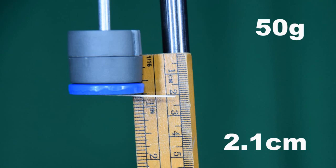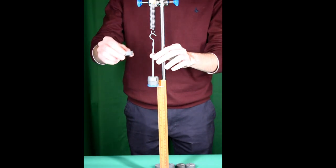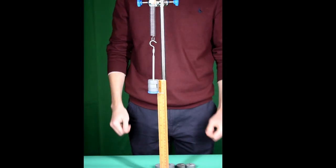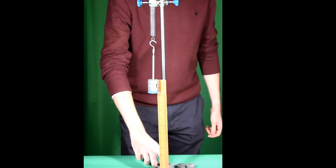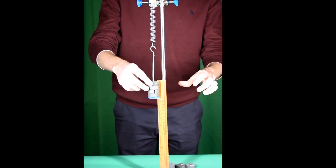2.1 cm. Another 50 grams is added, so that's two added masses and again the extension recorded. 4.4 cm. And another 50 grams. Note the use of the reference point at the bottom of the mass hanger.